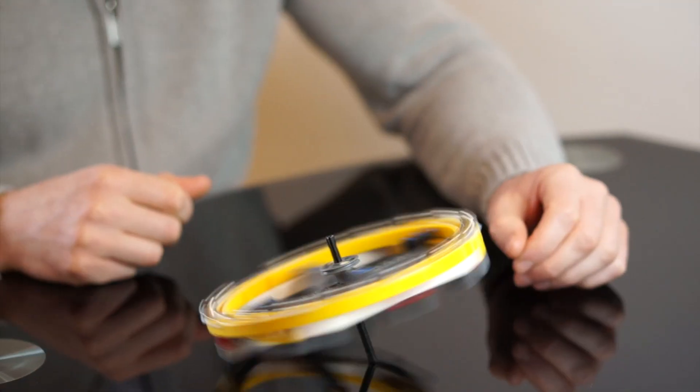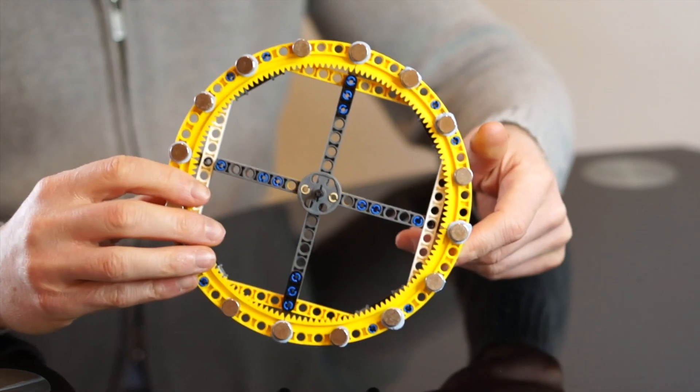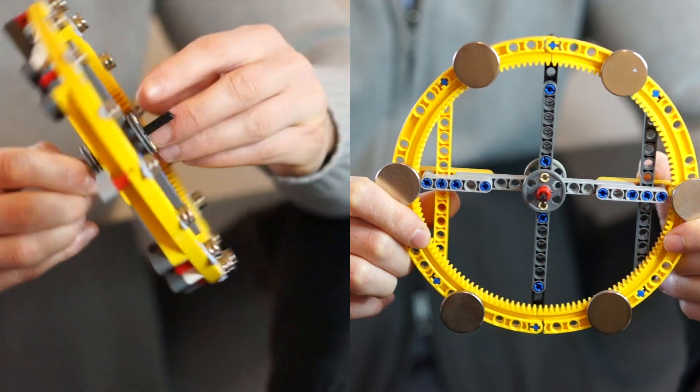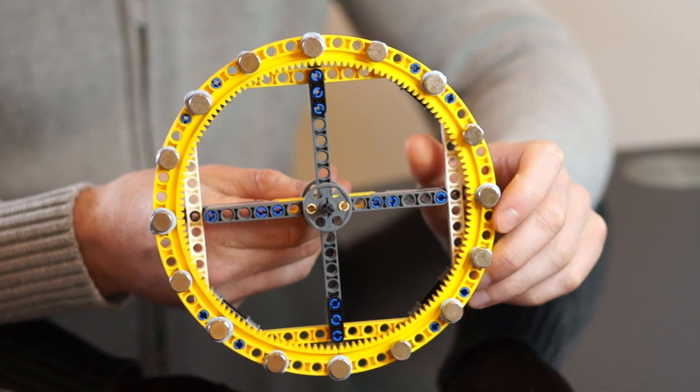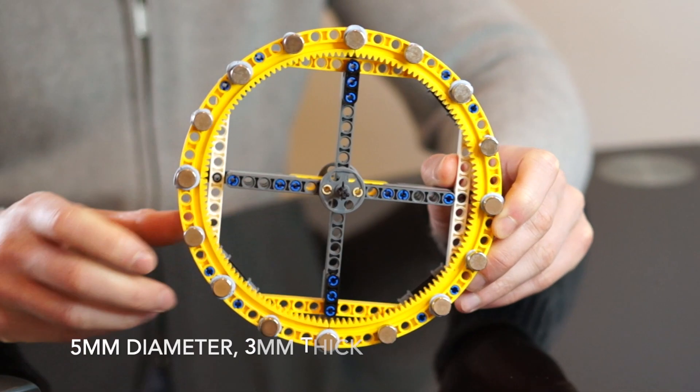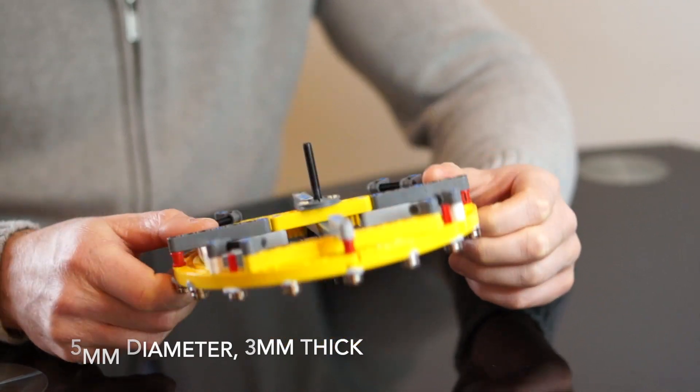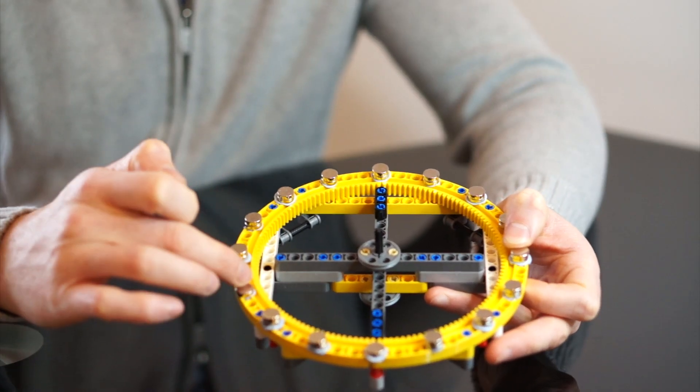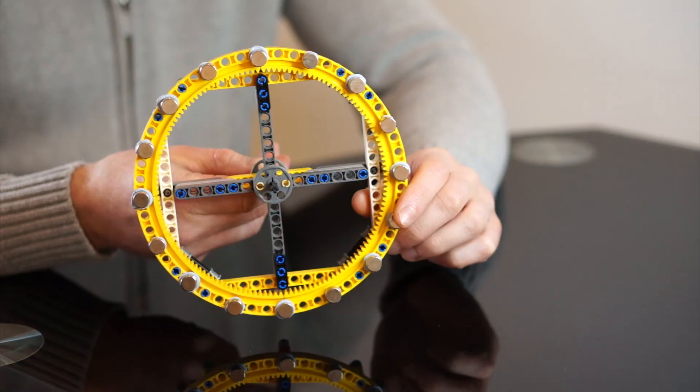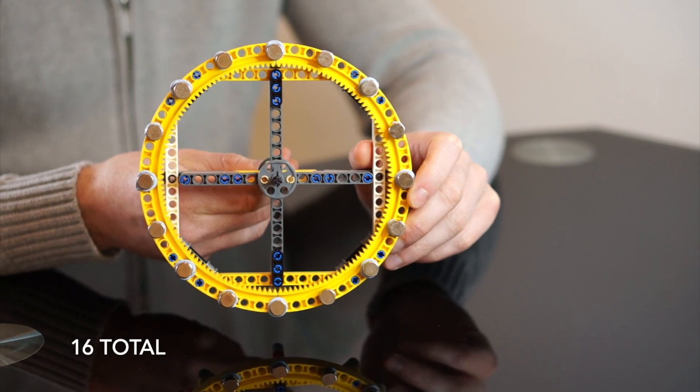Finally then we have the magnets which are mounted on the flywheel. I have two flywheels here one that has very small neodymium magnets which are 5 millimeter in diameter and 3 millimeters thick. These are weak but we can fit many of them around the wheel in fact there are 16 around this wheel.